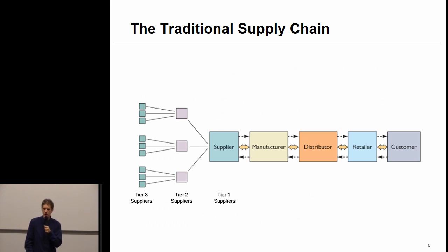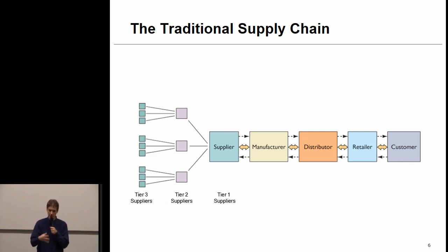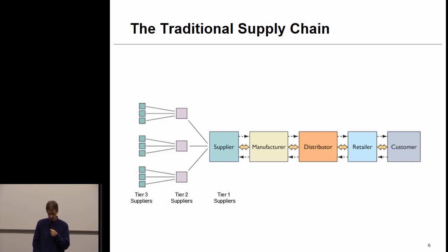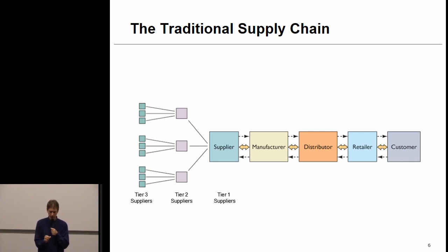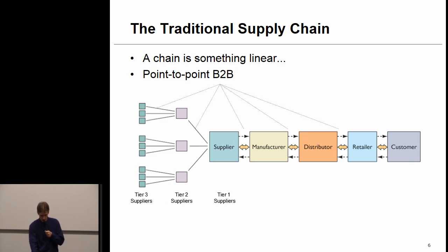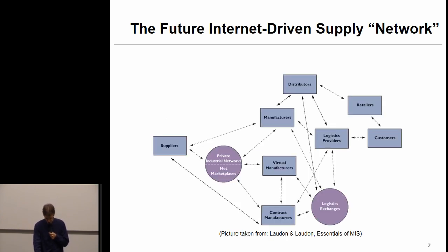If you look at how a traditional supply chain looked, it was very linear, very structured, what we call point-to-point. We had tier three suppliers, tier two suppliers, tier one suppliers, then a manufacturer which assembled products, then a distributor, then retailers, which sold directly to the end consumer. So it was highly structured, very linear, point-to-point, not very flexible, not very agile, with tight couplings established between parties.